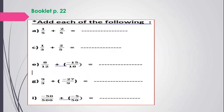From your booklet, add each of the following. 1 over 5 plus 2 over 5 — this is a simple example. Same denominators, keep 5 in the denominator and add the numerators. The answer is 3 over 5.